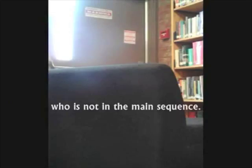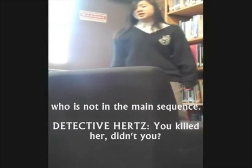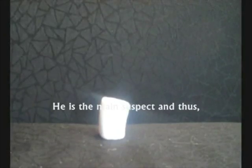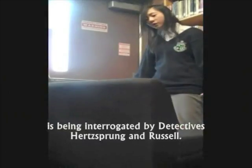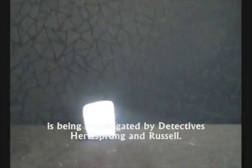This is Sirius B who is not in the main sequence. He is the main suspect and thus is being interrogated by Detectives Hertzsprung and Russell.